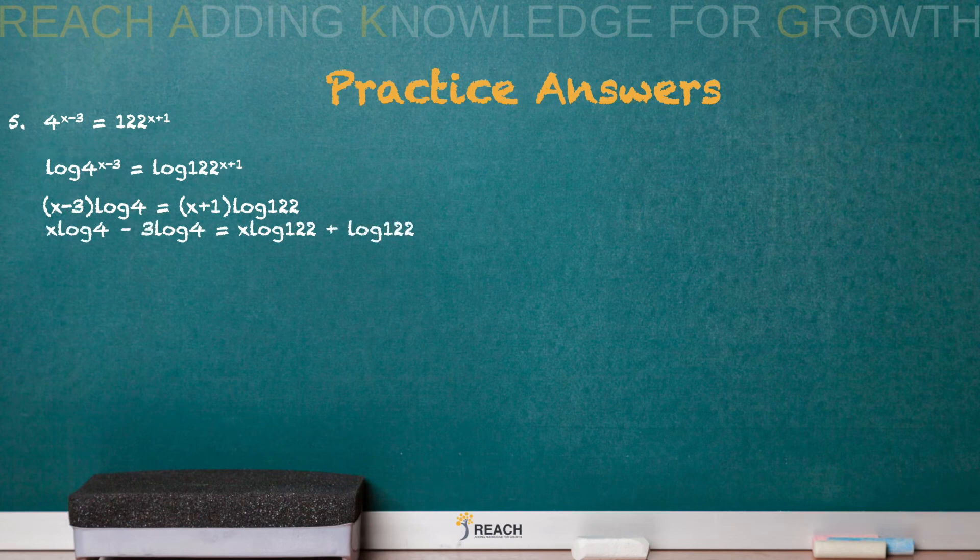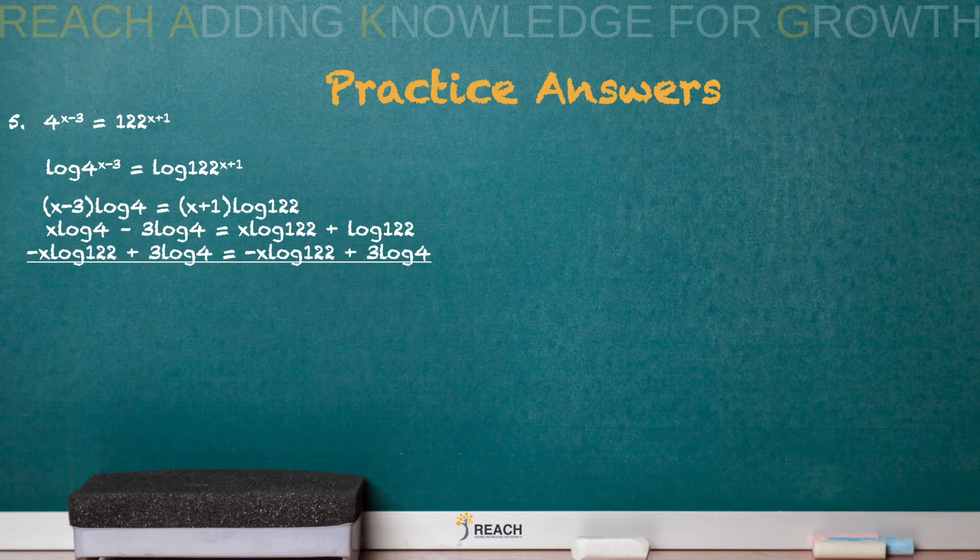And then you have to do your distributive property. All right, now I need to get all the x's on one side. So I'm going to subtract my x log 122.